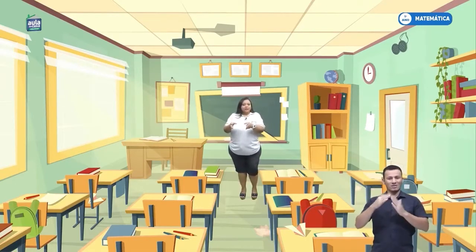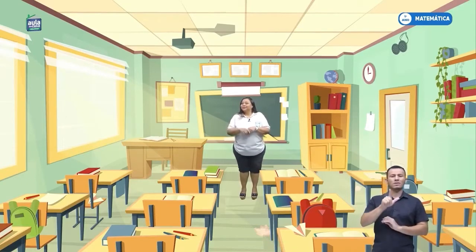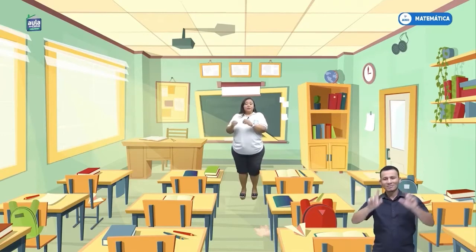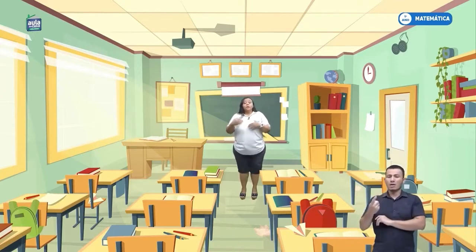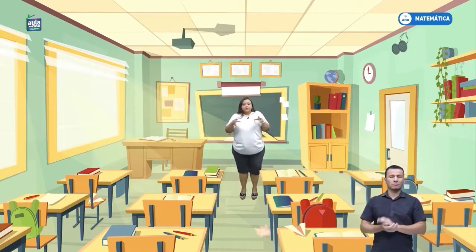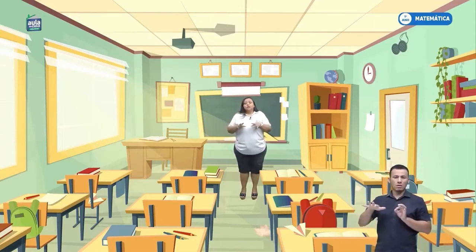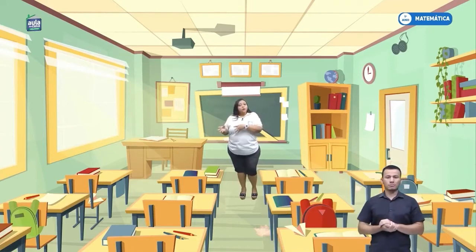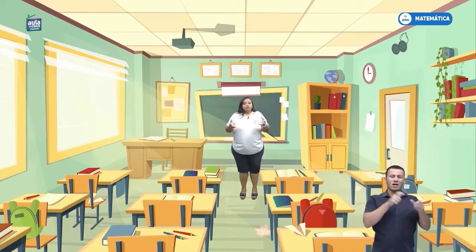Por exemplo, se eu tenho uma coleguinha sentada aqui na minha frente — a Lívia, ela sempre fica ali. Ela sempre senta na primeira cadeirinha, então o espaço dela na sala de aula é aqui, pertinho da professora, da mesa da professora. E tem coleguinhas que sentam mais atrás, sentam no meio. Conforme essa localização que a gente senta, é a nossa distância, é o nosso espaço que a gente ocupa. Tem gente que já fica mais próximo da porta, mais próximo da janela, da lousa. Esse aqui é o nosso espaço.